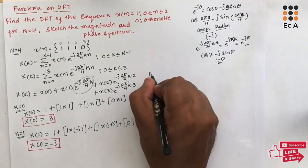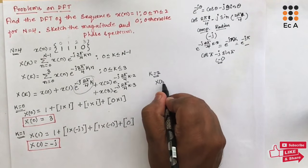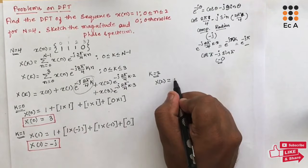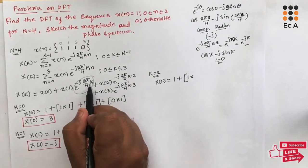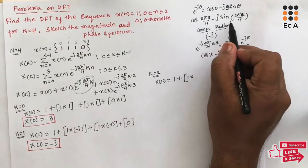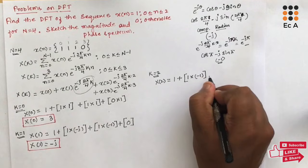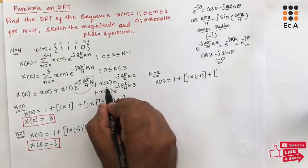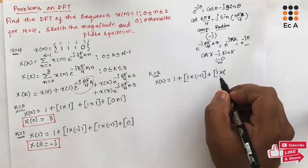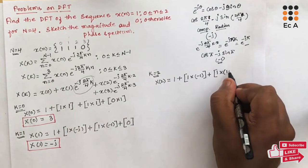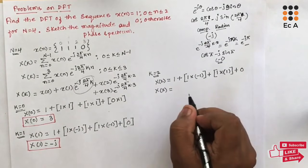Now let us put k = 2. X[2] = x[0] + x[1] * e^(-j2π*2/4) + x[2] * e^(-j2π*4/4) + 0. Substituting k = 2, the terms give 1 + 1*(-1) + 1*(1) + 0 = 1. So X[2] = 1.